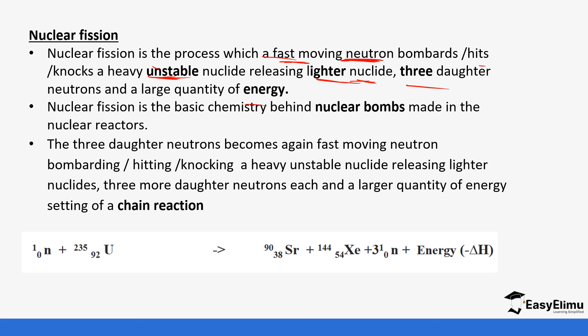So this is an example. This is a neutron you can see. The mass number is one. Atomic number is zero. You can see how it's hitting this uranium which is very large and we are producing this daughter nuclei and a lot of energy is given off. So we need to remember that the mass number will always change when a nuclear fission occurs.